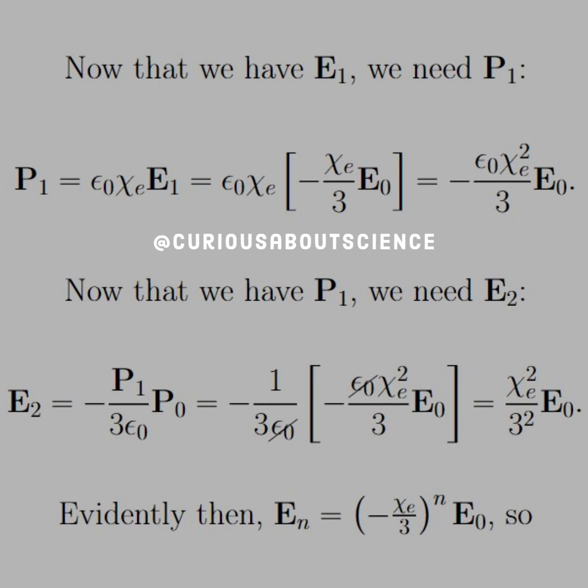And of course, now that we have E1, we need to find P1. So multiply E1 by epsilon not chi E, and we see that we have a square term now.